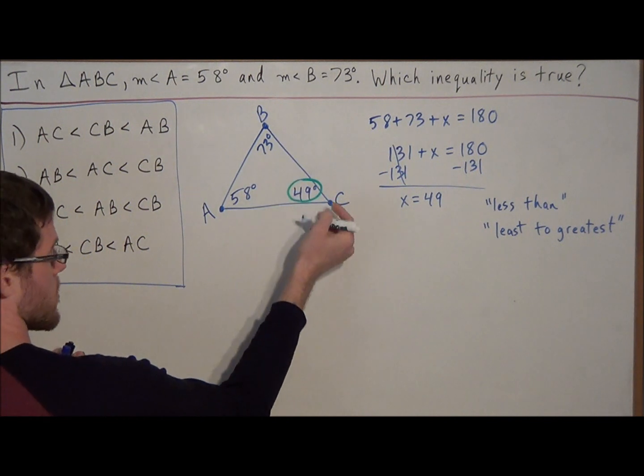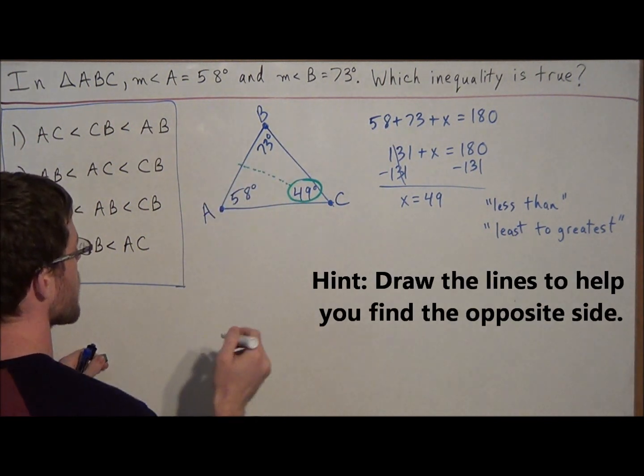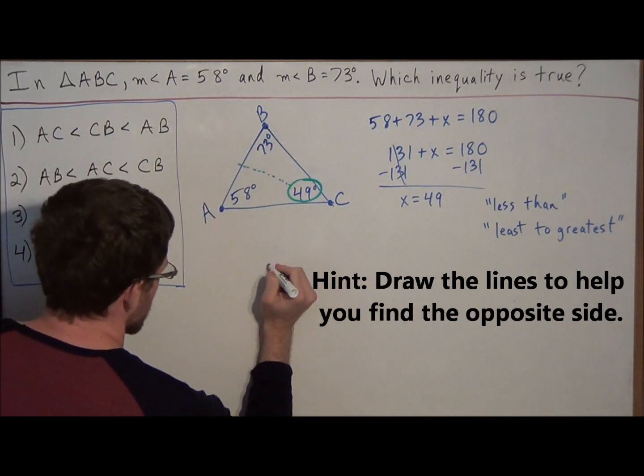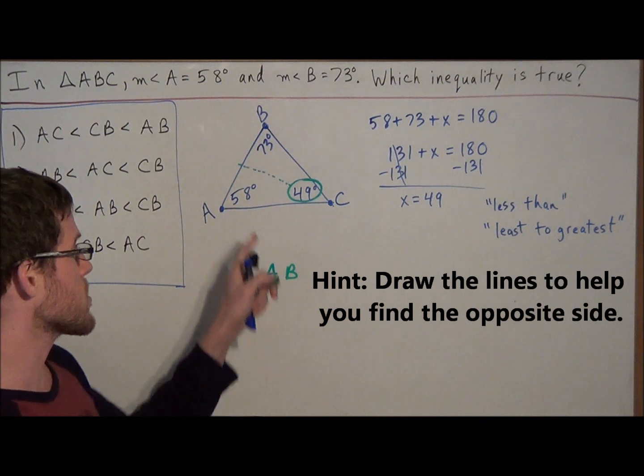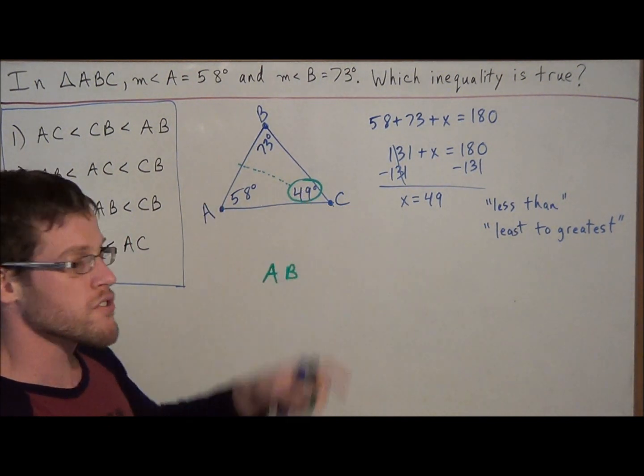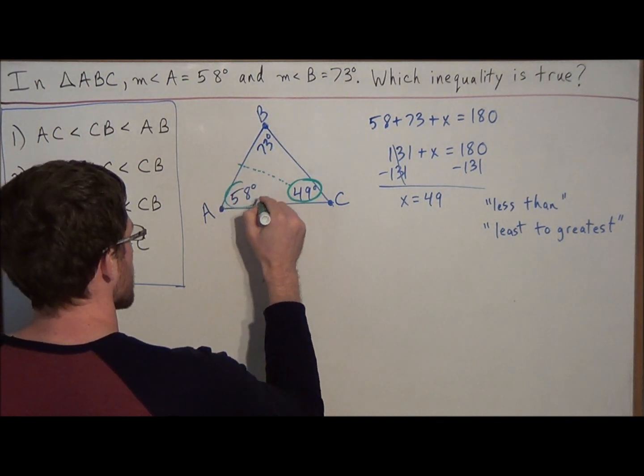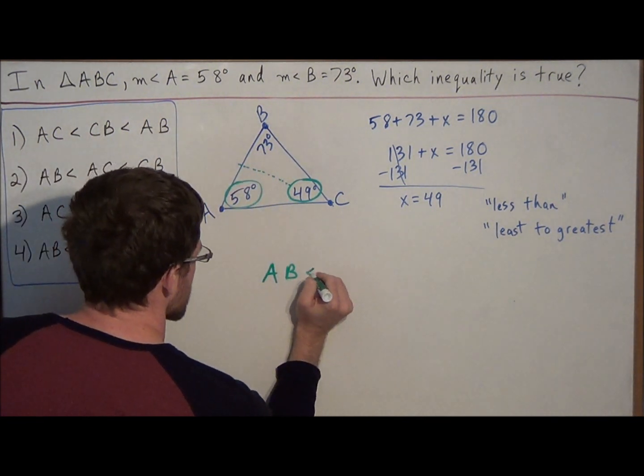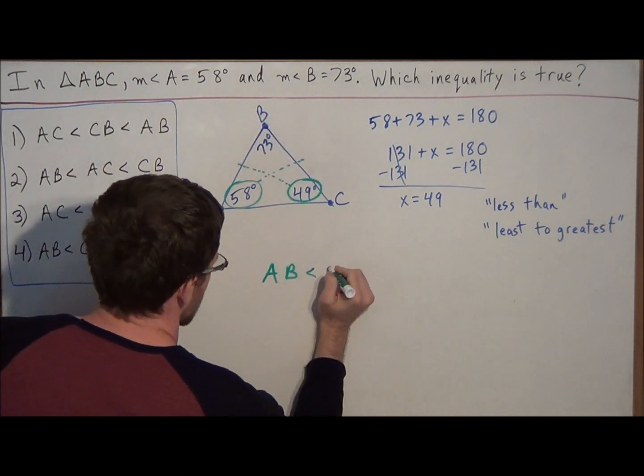So we go opposite of angle C. And notice when we go opposite of angle C, the first side we hit is side AB. So AB is going to be the smallest side in our triangle. So after 49, the next smallest number is 58. So this tells us that the next smallest side is going to be side BC.